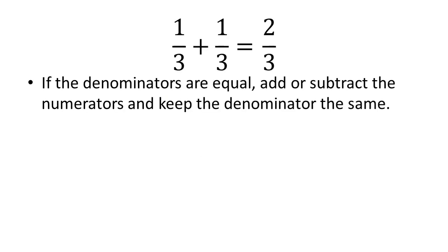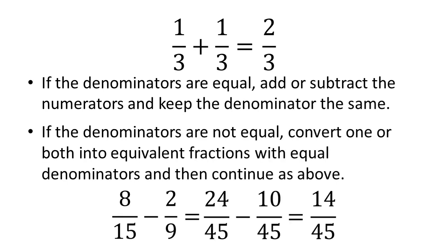To summarise: if the denominators are equal, we just add or subtract the numerators and keep the denominators the same. If the denominators are not equal, we convert one or both fractions into equivalent fractions with equal denominators and then continue as above, adding or subtracting the numerators. If you've enjoyed this video, don't forget to subscribe to the Doing Maths channel, or check out more videos by clicking on the links here.